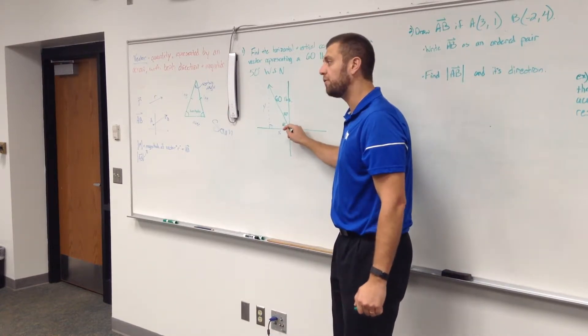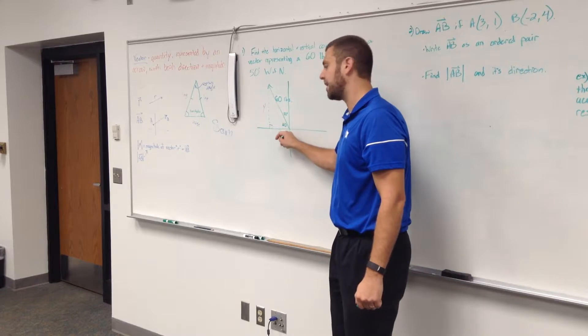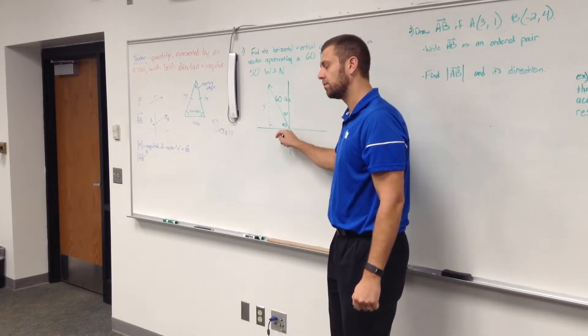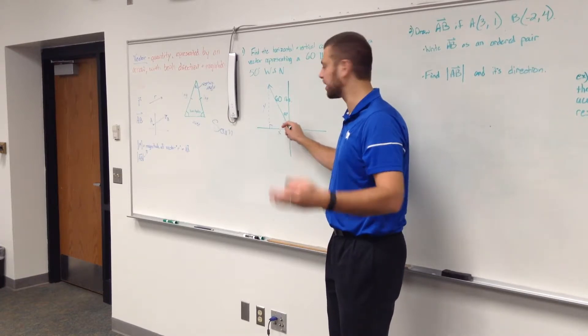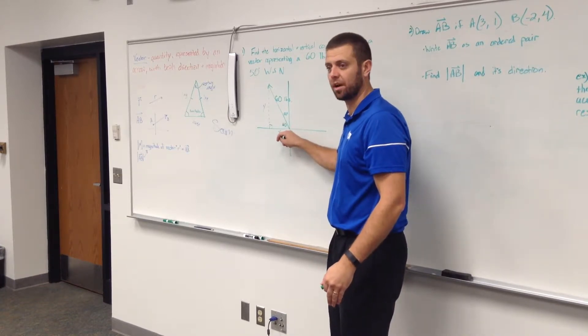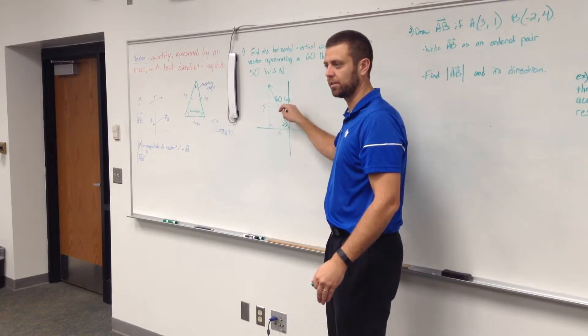Cosine is always helpful for x, because cosine is adjacent. Cosine is adjacent over hypotenuse, so cosine will help you find x.